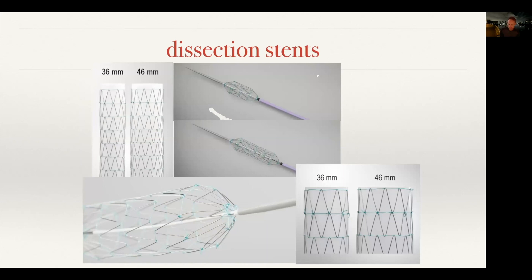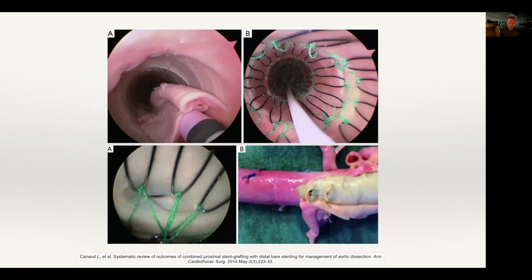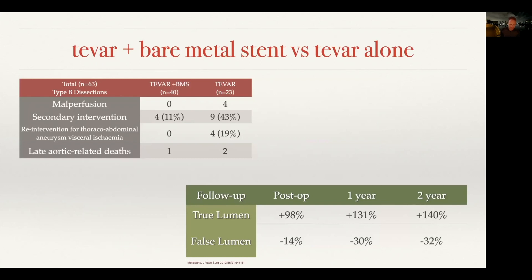The uncovered dissection stents used in the PETTICOAT technique preserve intercostals, allow stenting across visceral vessels, and permit re-intervention as needed. They come in two sizes only — 36 mm or 46 mm diameter — with low radial force, and are sized according to the stent graft being deployed. For example, with a 22-23 mm ascending surgical graft, a 36 mm dissection stent is used; a 38 mm graft would call for a 46 mm stent. Published data from cardiothoracic surgery demonstrates how these stents open the true lumen and show re-intervention rates and aortic remodeling with this combined approach.